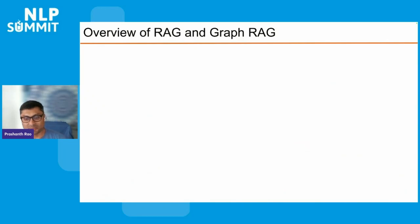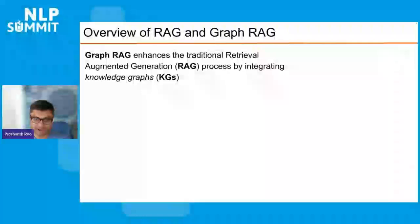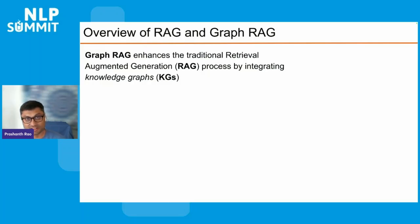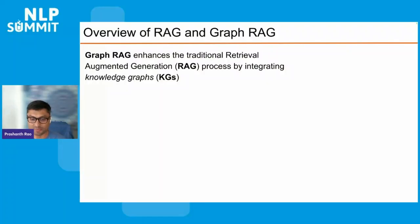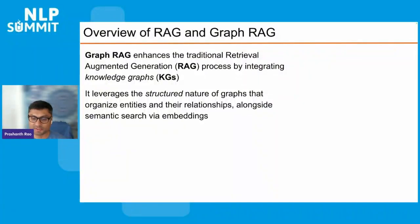I'll start with a brief overview of the terms GraphRAG and RAG itself. Retrieval Augmented Generation, or RAG, is a suite of tools and frameworks that combines the strengths of traditional information retrieval systems, such as databases, with the capabilities of generative large language models, or LLMs. GraphRAG can be viewed as a type of RAG system that enhances the traditional retrieval augmented generation process by integrating knowledge graphs, leveraging the structured nature of graphs which organizes entities and relationships in your data, alongside semantic search via embedding models.